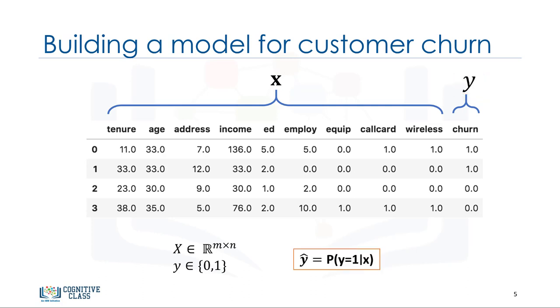Ideally, a logistic regression model, so-called y-hat, can predict that the class of the customer is 1 given its features x. It can also be shown quite easily that the probability of a customer being in class 0 can be calculated as 1 minus the probability that the class of the customer is 1.